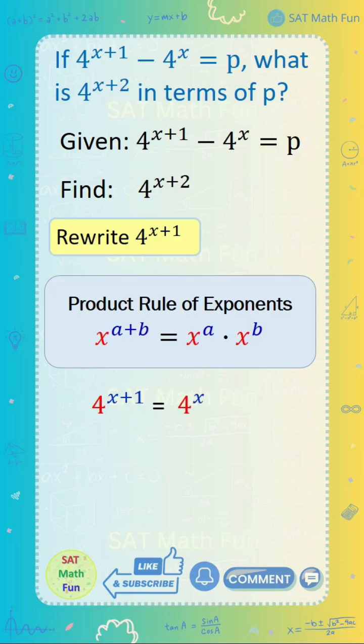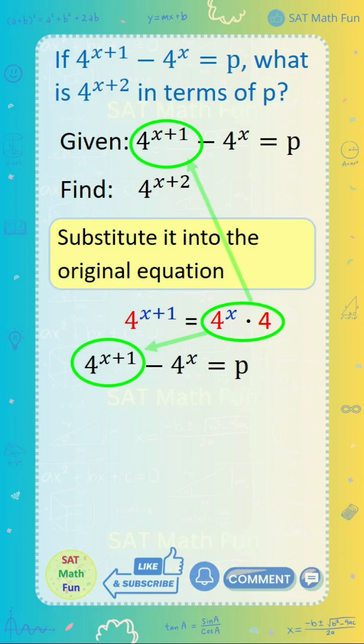So we can rewrite it as 4 to the power of x times 4 to the power of 1, which is just 4. Now, we substitute this back into the original equation and get this.